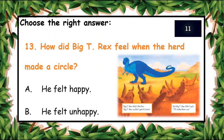The next question: how did Big T-Rex feel when the herd made a circle? A: He felt happy, B: He felt unhappy. You have ten seconds to answer. Yes, he didn't like this because he couldn't get his lunch.